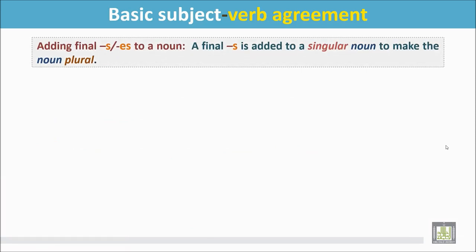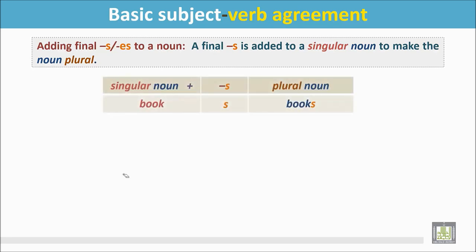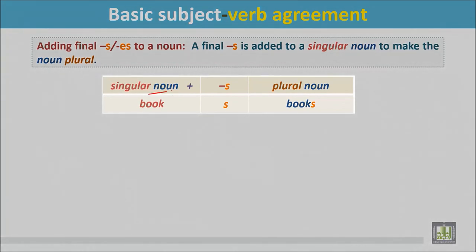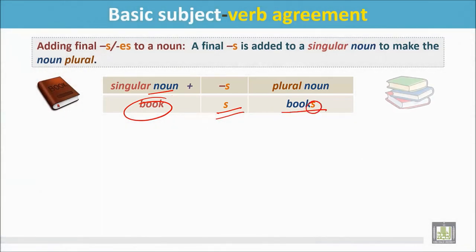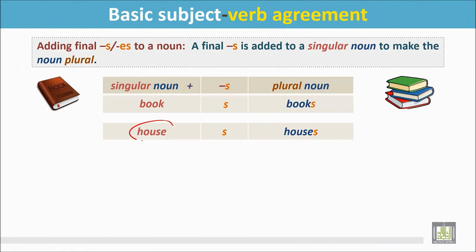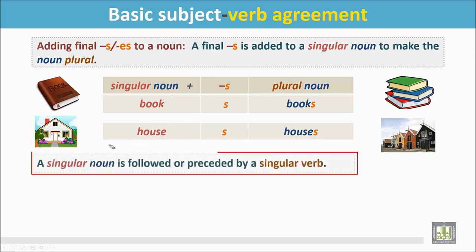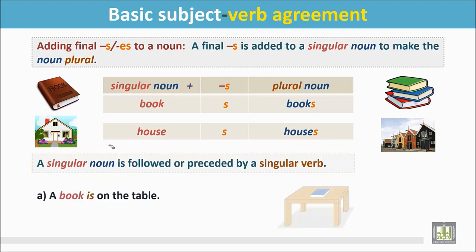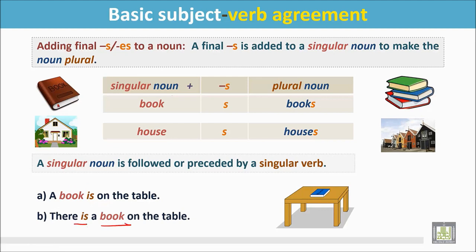Adding a final S or ES to a noun. A final S is added to a singular noun to make it plural. For example, 'book' becomes 'books,' and 'house' becomes 'houses.' A singular noun is followed or preceded by a singular verb, such as: a book is on the table, the book is on the table, or there is a book on the table — where 'book' is preceded by the singular verb 'is.'